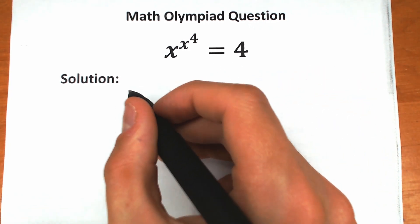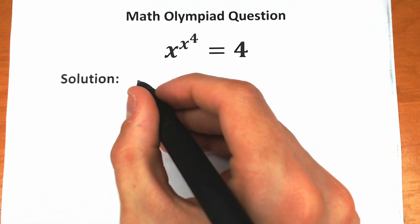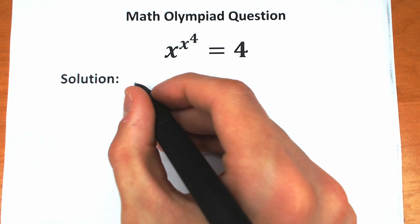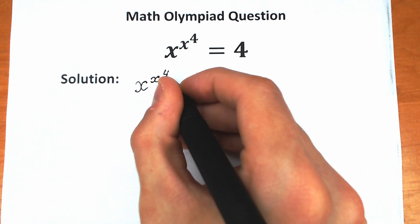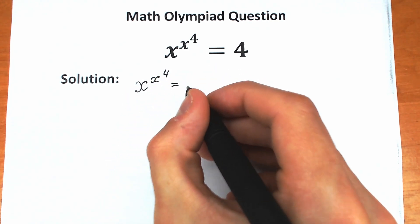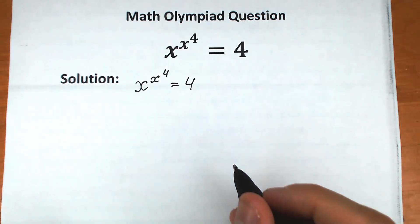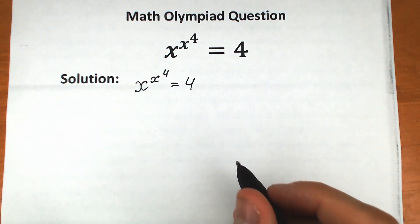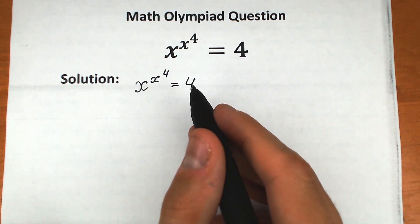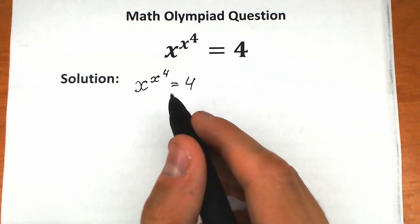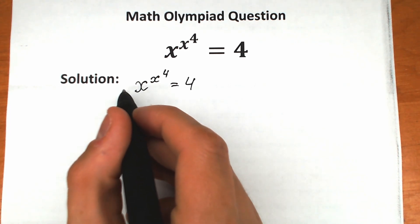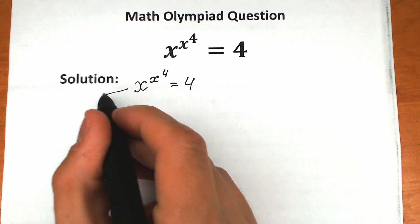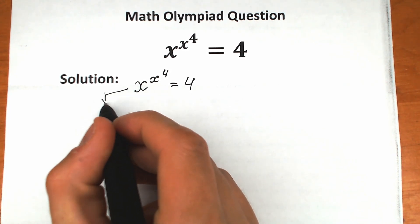First of all, let's rewrite our challenge right here. So we have x to the power x to the power 4, equal to 4. This is our challenge. I suggest you to raise both sides to the power 4. Don't ask me why, but let's do that — this is a really great trick. Let's continue solving right here in this part of paper.